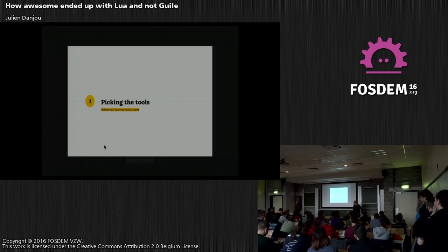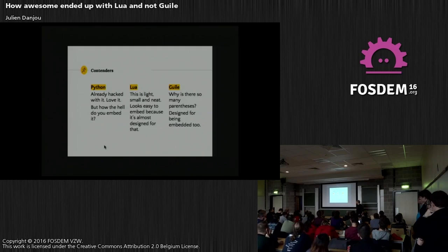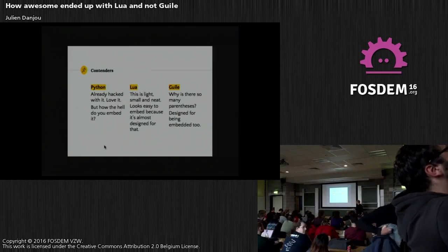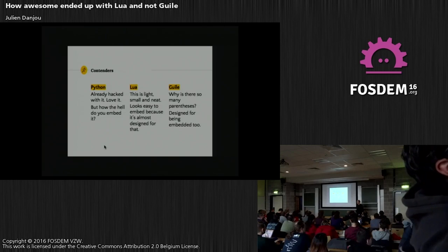So I started to look at what options I had to avoid writing my own DSL. I decided I needed a full language — maybe not something very heavy, because it's still a small window manager. So in 2008 I looked at what existed and reduced the list to three languages. Python, because I already used it, but it's not really designed or sold to be embedded. It's possible, there are a few programs doing it, but it's not on the box as being great for embedding.